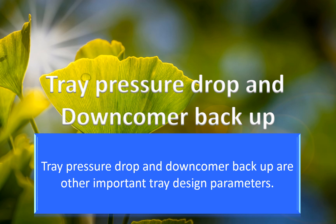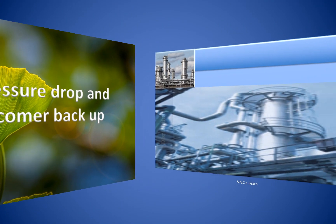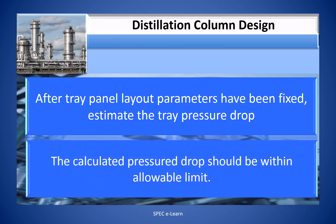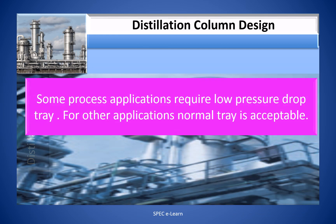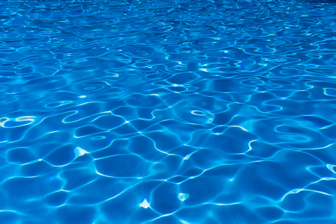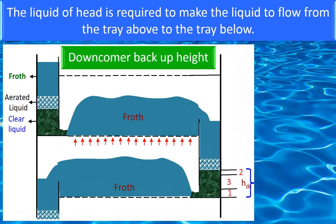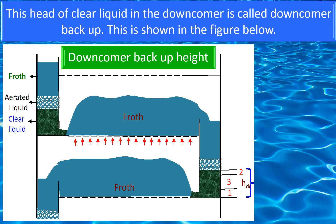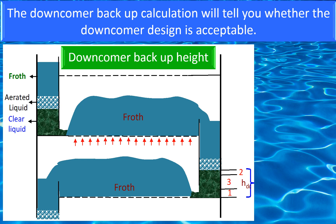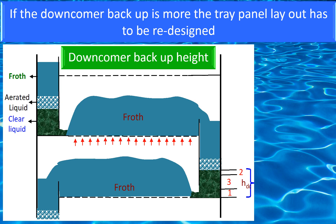Tray pressure drop and downcomer backup are other important tray design parameters. After tray panel layout parameters have been fixed, estimate the tray pressure drop. The calculated pressure drop should be within the allowable limit. Some process applications require low pressure drop trays; for other applications, a normal tray is acceptable. Check the application requirement and redesign the tray panel layout to reduce pressure drop if necessary. The head of liquid required to make liquid flow from the tray above to the tray below is called downcomer backup. The downcomer backup calculation will tell you whether the downcomer design is acceptable; if the downcomer backup is excessive, the tray panel has to be redesigned.